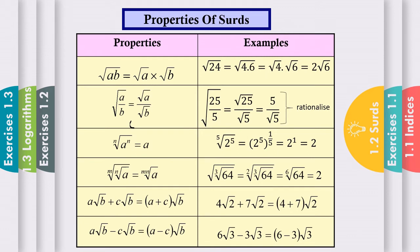These are the properties of surds. We have six altogether. The first property is: if you have the surd of A times B, you can write it separately as surd A times surd B. For example, surd 24 equals surd 4 times surd 6, which equals 2 surd 6.